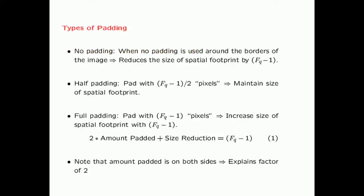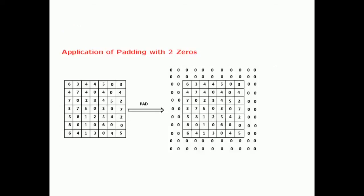There are several types of padding. No padding reduces the spatial footprint by FQ minus 1. Half padding — padding with (FQ minus 1)/2 pixels — maintains the size of the spatial footprint. Full padding — padding with FQ minus 1 pixels — increases the spatial footprint by FQ minus 1. The general formula is: size change equals 2 times the amount padded minus (FQ minus 1), with the factor of 2 because you pad on both sides.